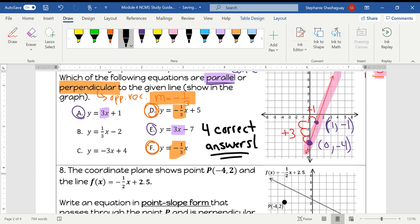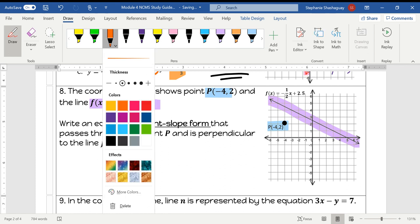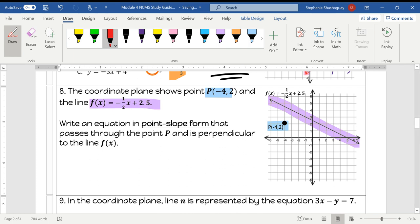Okay, moving on to question 8. The coordinate plane shows the point P at negative 4, negative 2 and the line f(x). So this is the line f(x) and they even gave you the equation of the line, so we can easily identify the slope of this line. The slope of this line is negative 1 over 2.